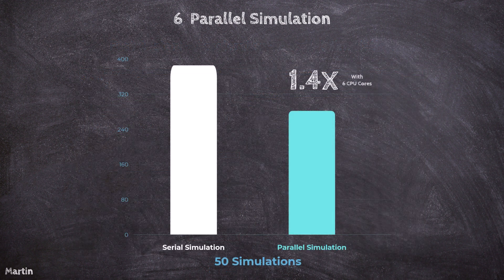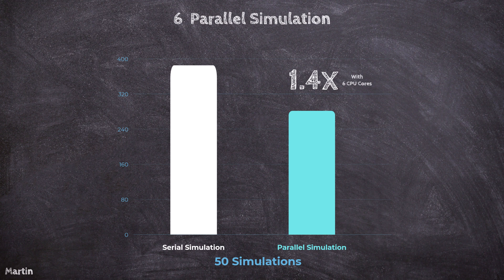This chart summarizes the simulation performance for the example, where 50 simulations were executed using both serial and parallel methods with six CPU cores. Total simulation time was 1.4 times faster compared to the serial simulation.